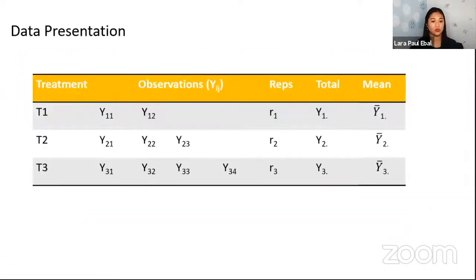And now next, we expect to have this data presentation. So since we are dealing with two replicates under treatment one, then we have two observations. Because we have two replicates, so from each replicate there is one observation. So for treatment two, we use three replicates, then we expect to have three observations. So this is the data presentation. Then we also have the replicates, the number of replicates, and then the total, and then the means. So basic data presentation.